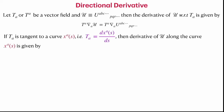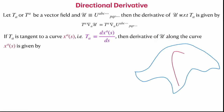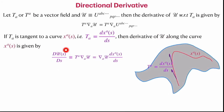If T_A is a tangent vector to a curve x^a(s), parametrized with respect to arc length s, then T^A equals dx^a/ds. The derivative of a tensor field u along the curve is written as capital D u / D s, which equals del_A u times dx^a/ds. This is the covariant derivative contracted with the tangent vector, giving the directional derivative along the curve.